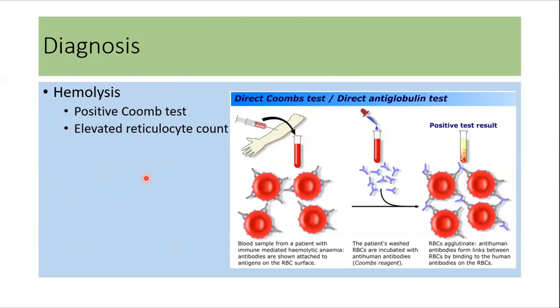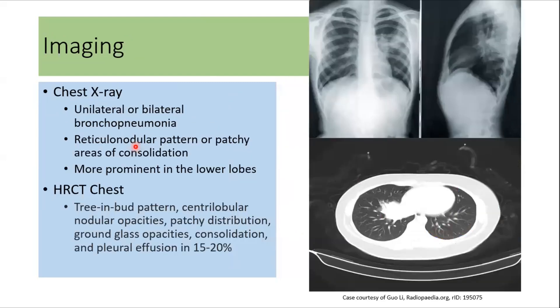Another test involves looking for hemolysis, as Mycoplasma pneumoniae infection can cause autoimmune hemolytic anemia. The Coombs test can be positive and the reticulocyte count can be elevated.